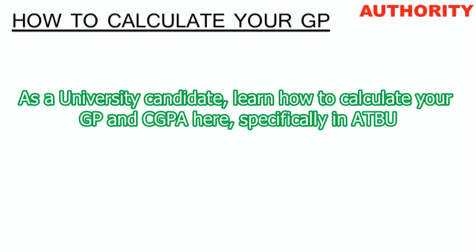Some courses have one credit unit, some have two, three, or four — it depends. The credit unit represents the weight of that course. It also tells you how long lectures last per week. For a three-credit-unit course, you're expected to attend at least three hours of lecture per week.